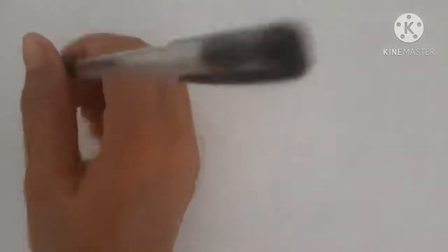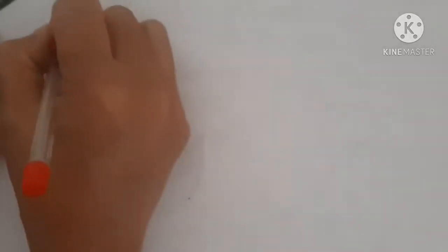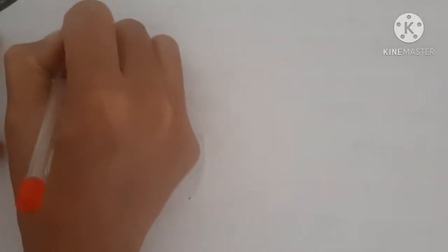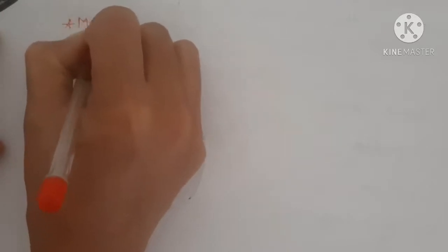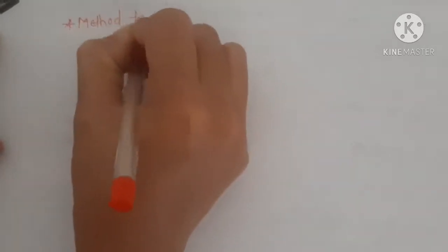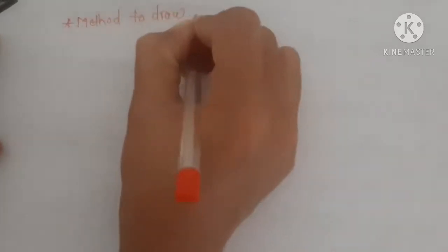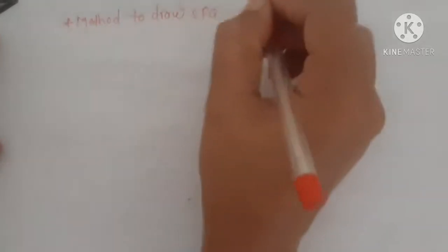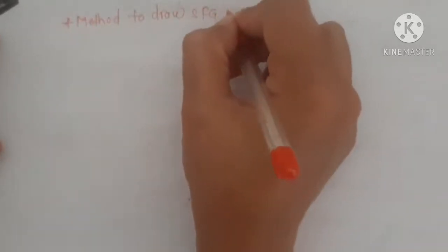Hello friends, welcome to the ASUS Technical Campus. In the previous lecture, we completed our topic on drawing signal flow graphs from system equations. Today we will see the next topic: the method to draw a signal flow graph from a block diagram.